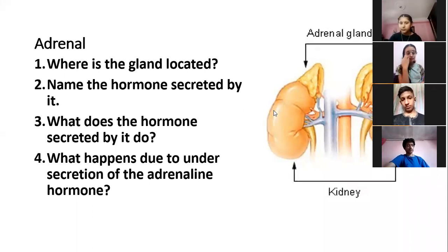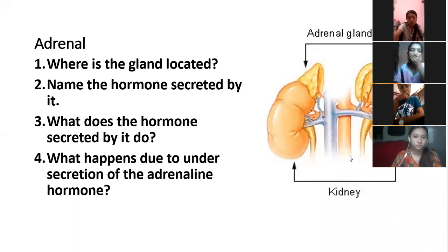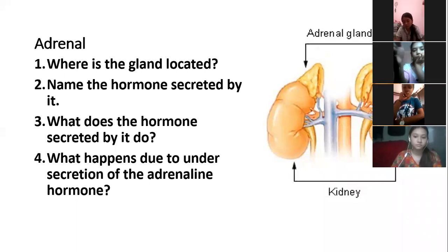Secondary sexual characteristics are different from primary characteristics, which involve the sex organs. Secondary characteristics include things like muscle mass and strong build in males, and in females, characteristics such as breasts, menstruation cycle, soft or shrill voice, and less muscle mass. These secondary sexual characteristics are determined by the sex hormones.